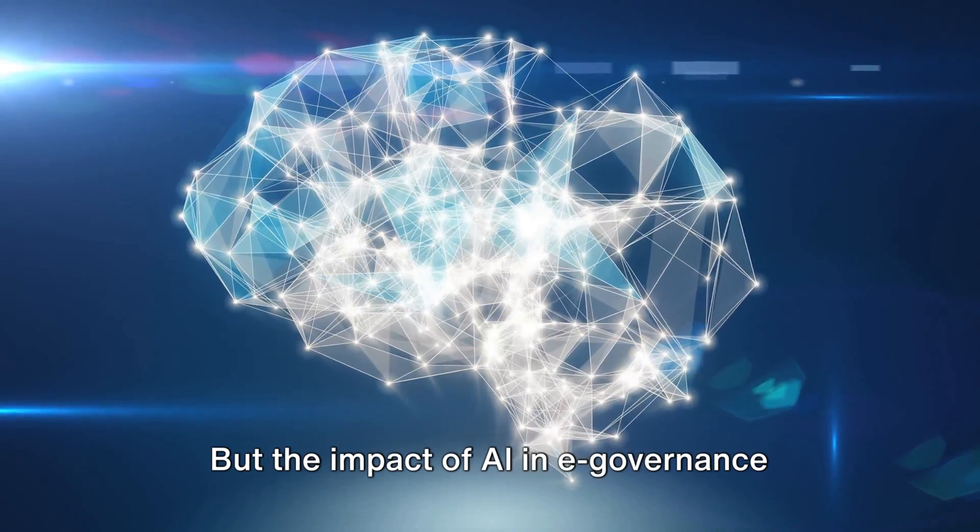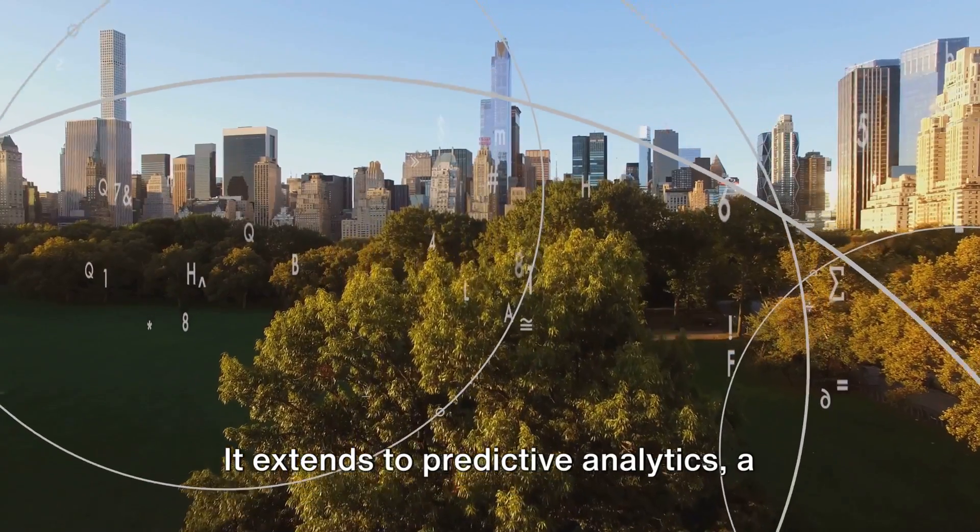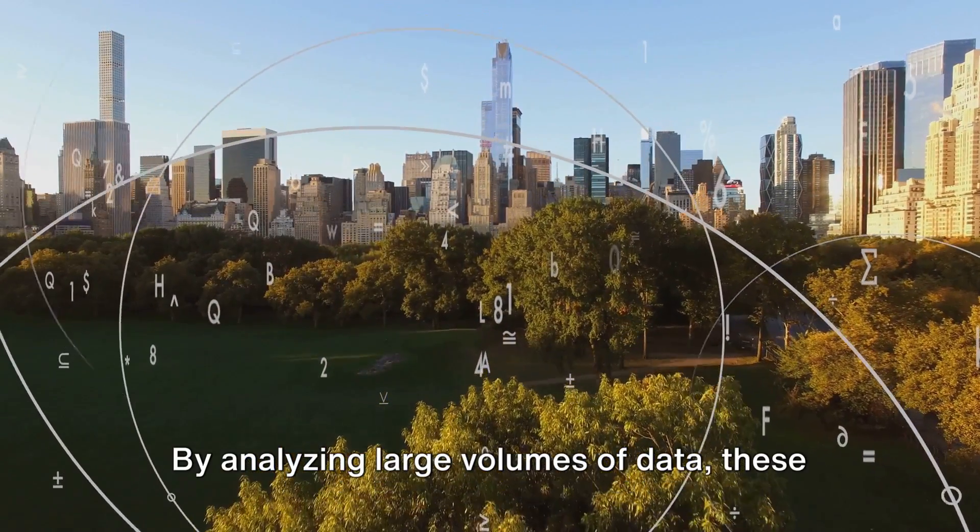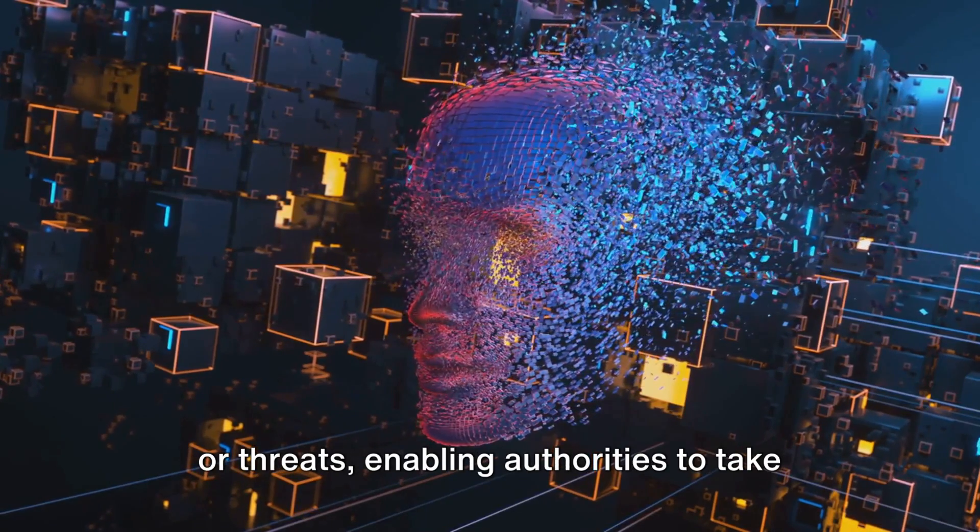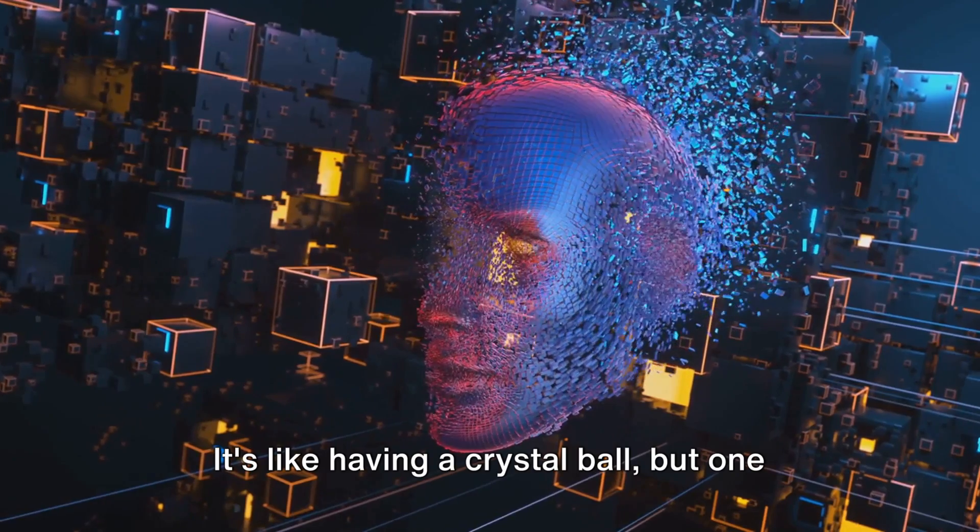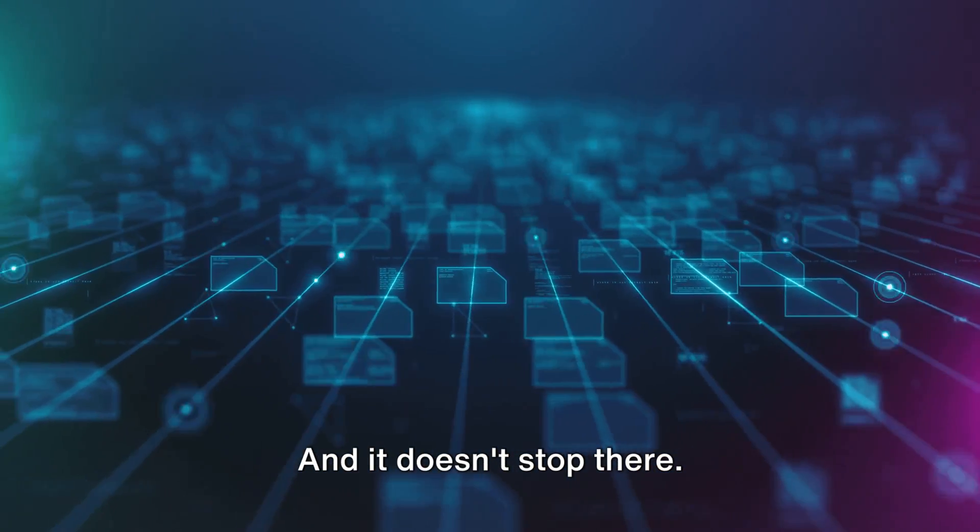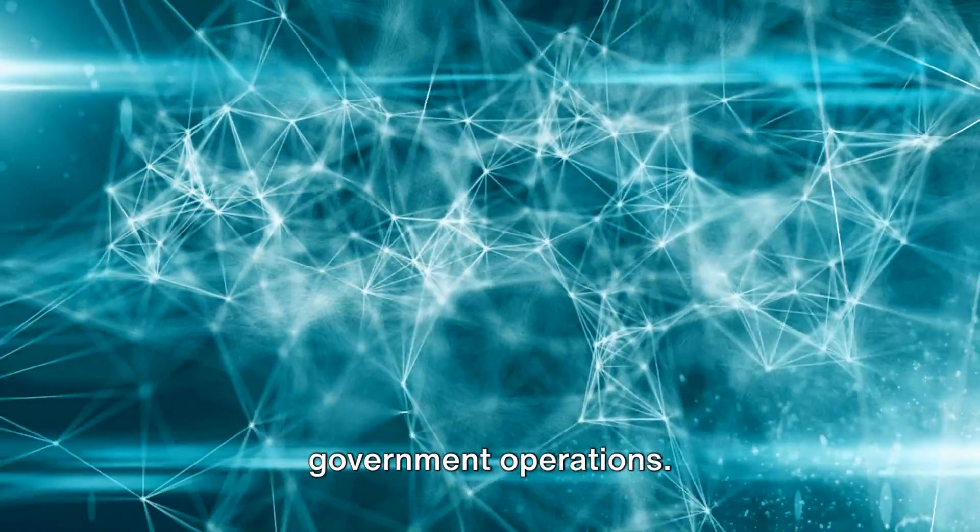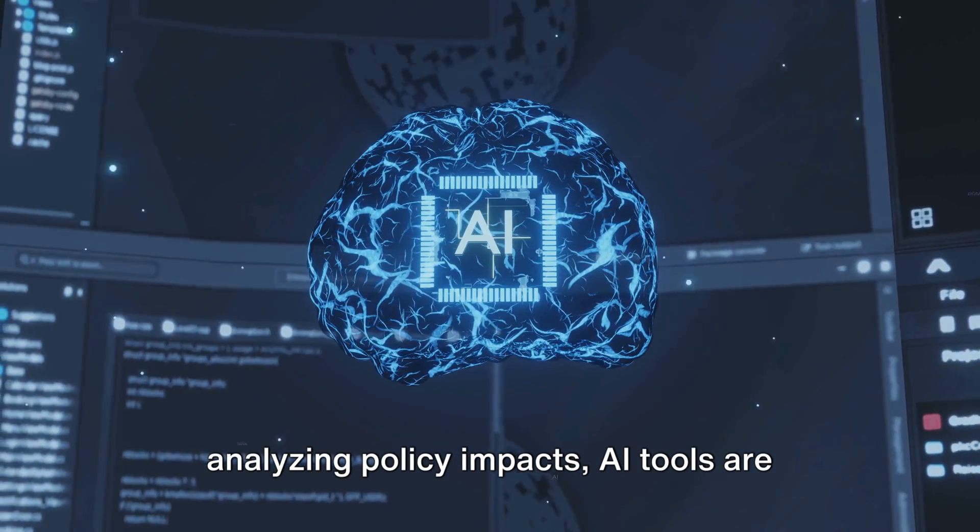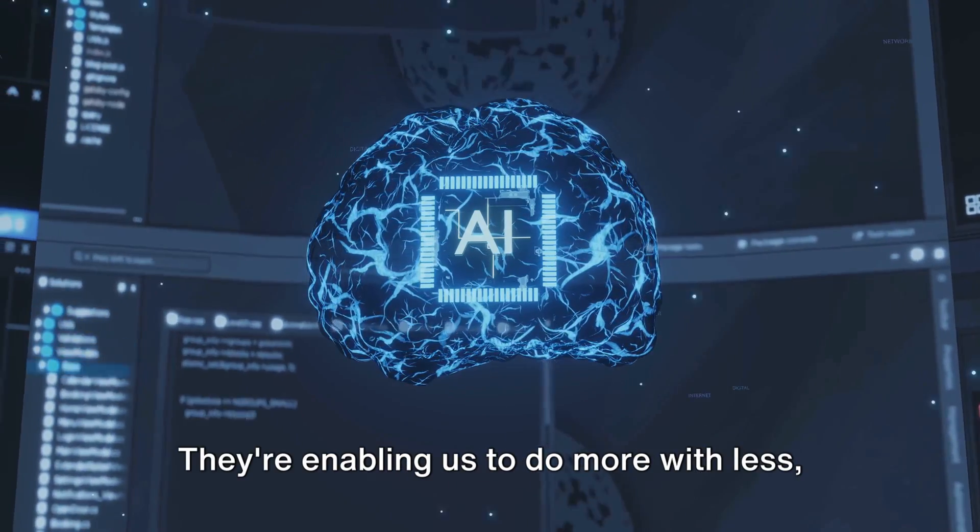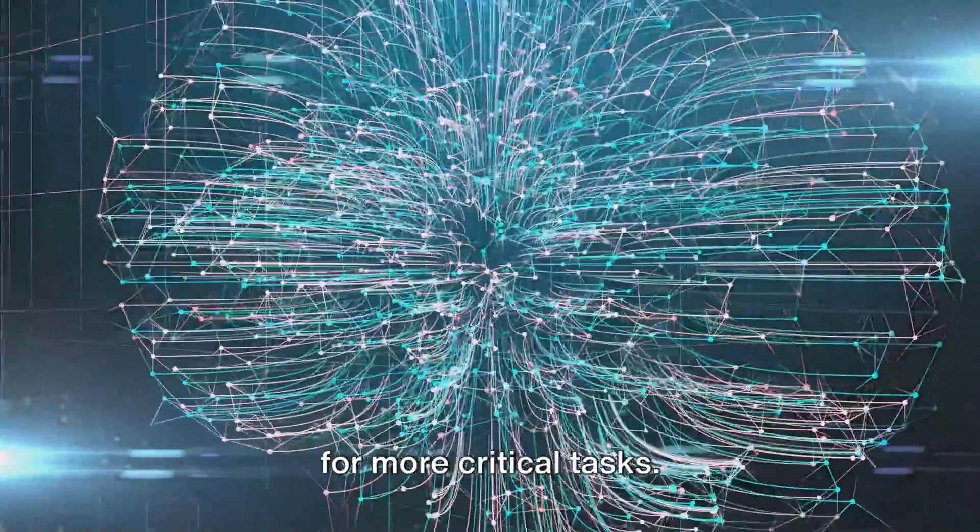But the impact of AI in e-governance isn't limited to just chatbots. It extends to predictive analytics, a tool that's playing a crucial role in public safety. By analyzing large volumes of data, these AI systems can predict potential incidents or threats, enabling authorities to take preemptive action. It's like having a crystal ball, but one that's powered by algorithms and big data. And it doesn't stop there. AI is also being used to streamline government operations. From automating routine tasks to analyzing policy impacts, AI tools are helping create a more transparent and efficient government. They're enabling us to do more with less, reducing costs and freeing up resources for more critical tasks.